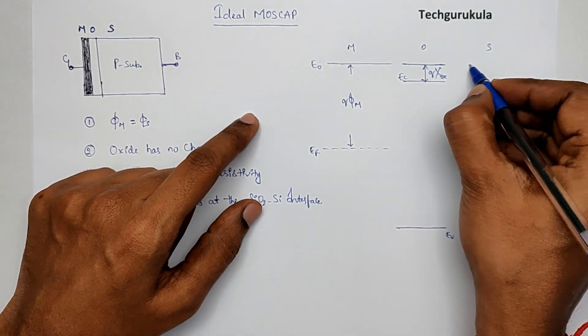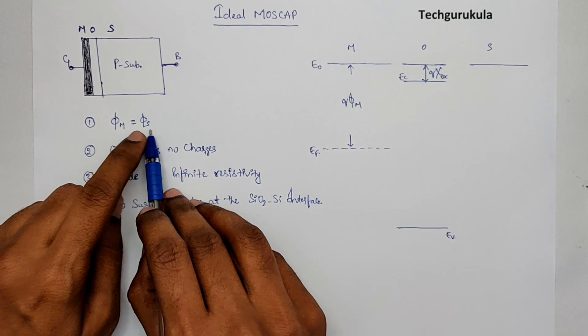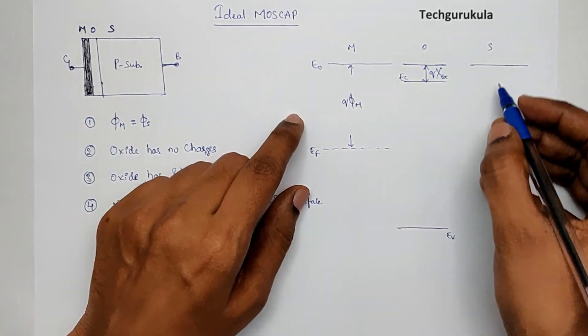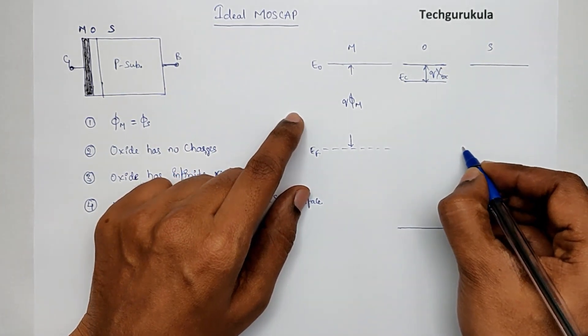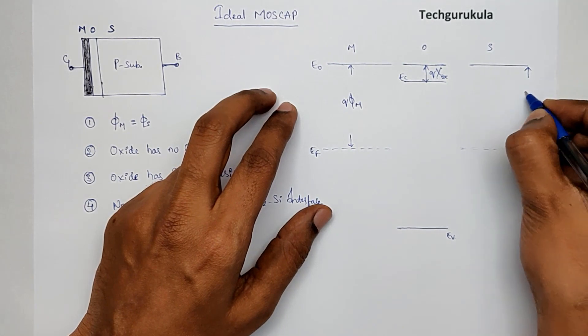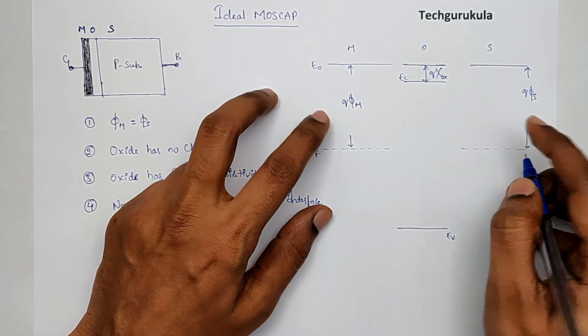And now, coming to the semiconductor, we are saying the first assumption is phi M is equal to phi S. I mean, Q times phi M is equal to Q times phi S. Which means, this value, this value, this difference should be equal to Q phi S, which should be equal to this.